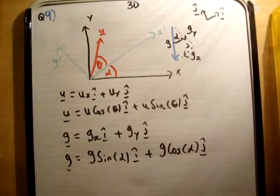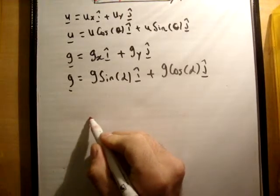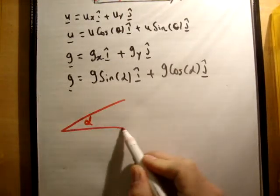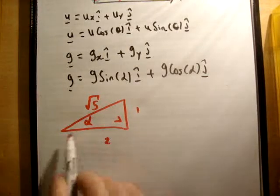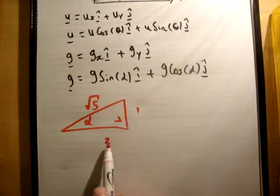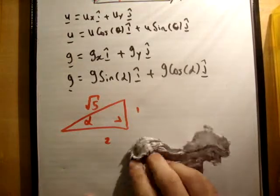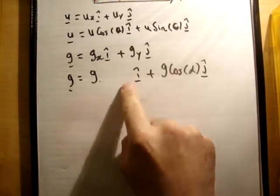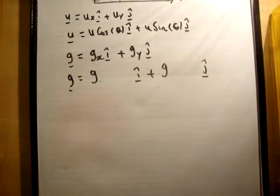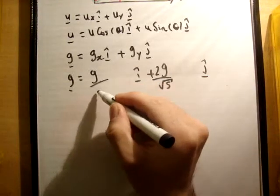We are given the value for alpha: tan α = 1/2. Drawing the right triangle, using Pythagoras the hypotenuse is root 5. So cos α = 2/√5 and sin α = 1/√5. For that reason we can substitute: the g cos α component becomes 2g/√5 and the g sin α component becomes g/√5.